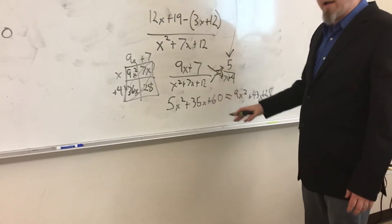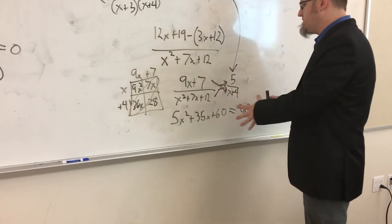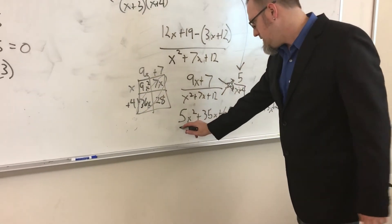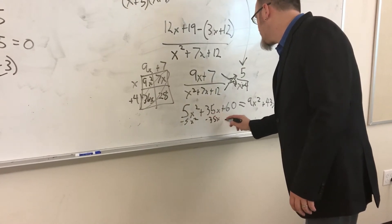So now, since this is quadratic, I'm going to get them all to one side like I had it before, and I'm going to start factoring from there. So I subtract 5x², I subtract 35x, and I subtract 60.